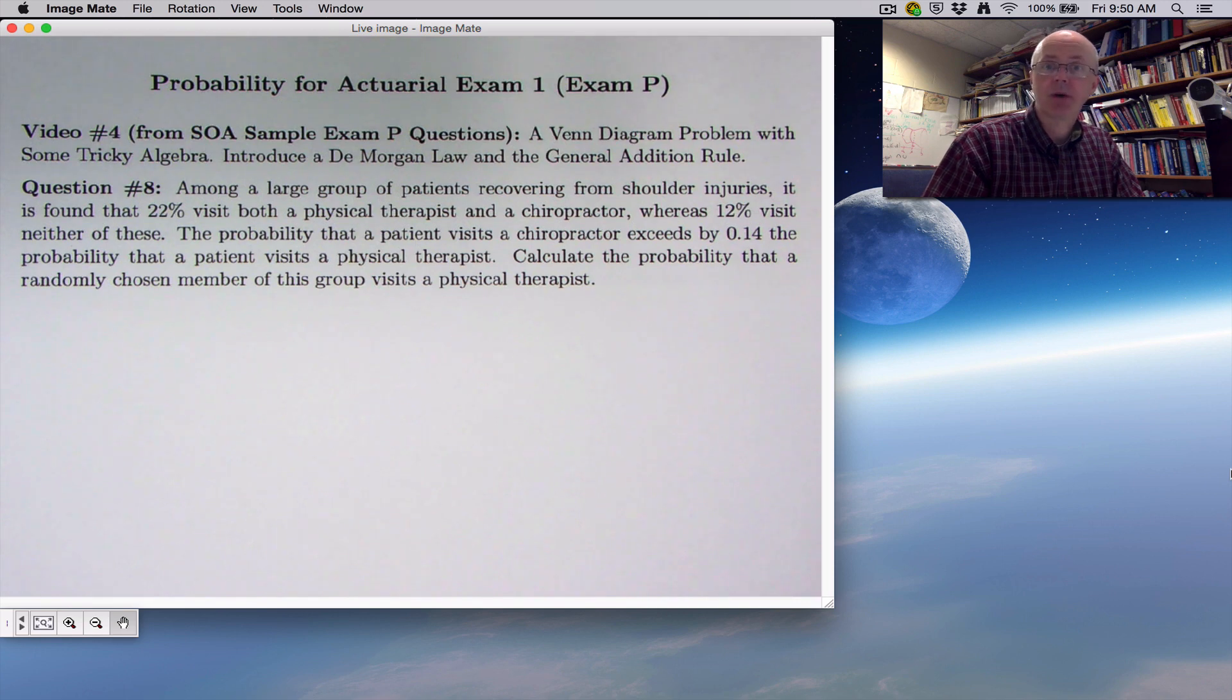In this video on actuarial exam 1, also called exam P on probability, we're going to do yet another Venn diagram problem. Once again, we'll take it in stages.